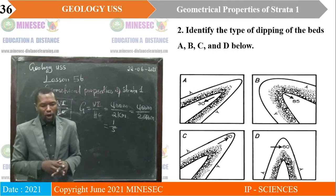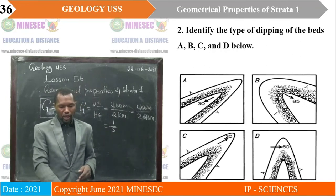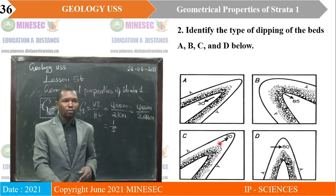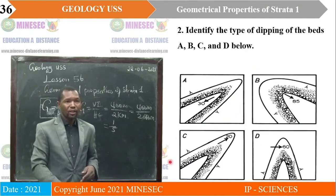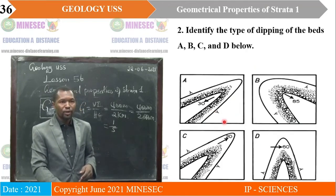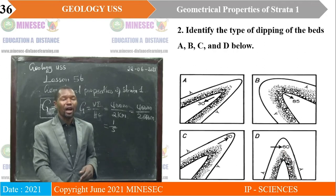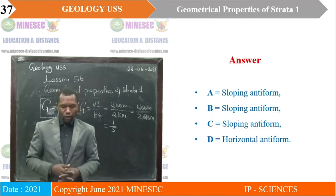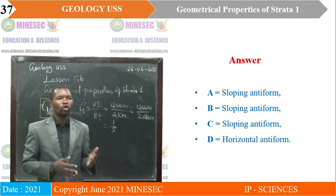Exercise two: Identify the type of dipping of beds A, B, C, and D. Bed A shows dips pointing away from the center — it is a sloping anticline (antiform). Bed B is also a sloping antiform, bed C is also a sloping antiform, and bed D is a horizontal antiform.